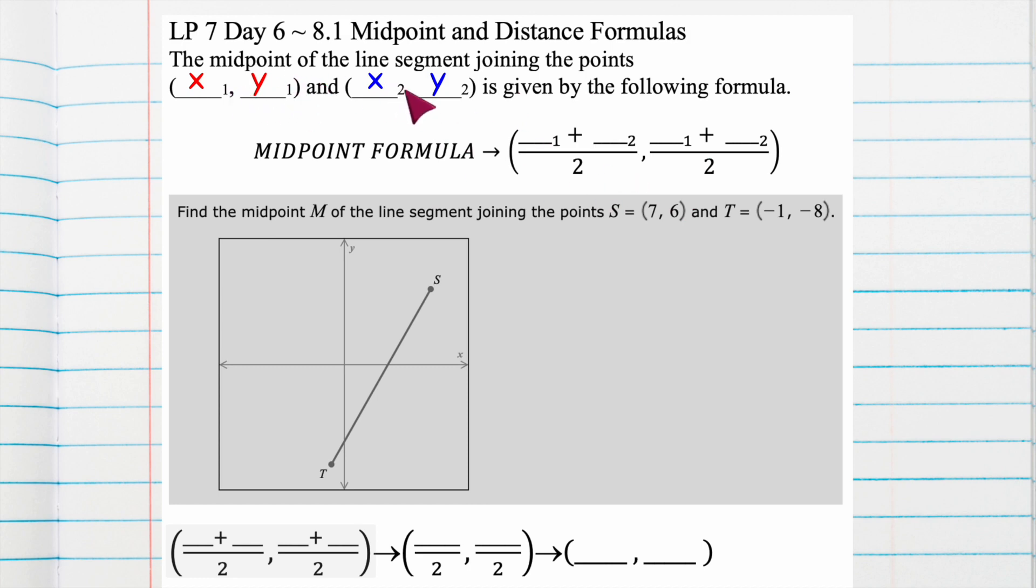Now remember, x1, y1, x2, y2, this is just a reference, the ones and the twos, to point one and point two. And it doesn't matter which one you label point one and point two, because we're going to see that down here, we have s and t, it doesn't say point one and point two, it says point s and point t.